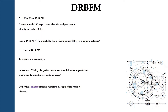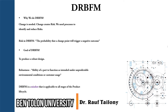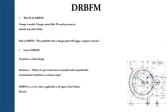In the previous lectures we discussed why we do DRBFM: change is needed in products, and change will create risk. We need to follow a certain process to identify and reduce that risk. Risk in DRBFM is the probability that the change point will cause a negative outcome and make our product worse than before. The goal of DRBFM is to produce a robust and durable design — robustness meaning the ability for the part to function as intended under unexpected environmental conditions or customer use.